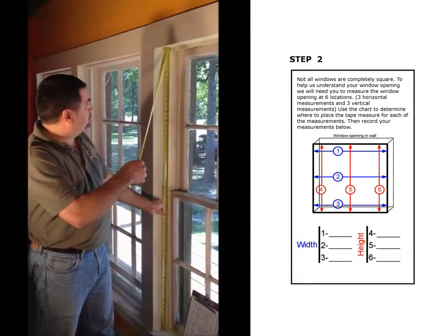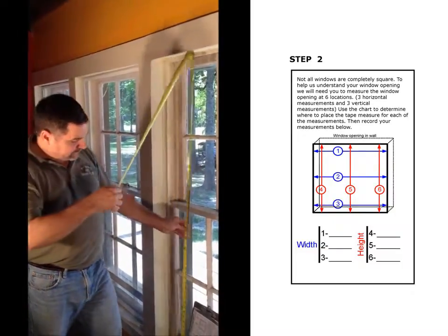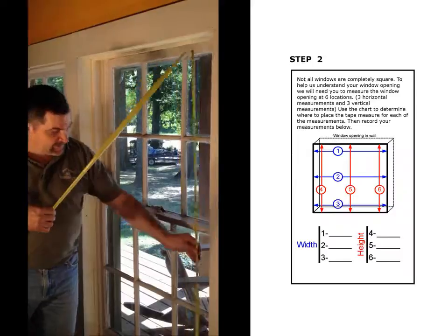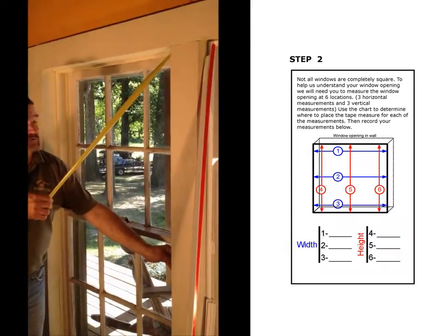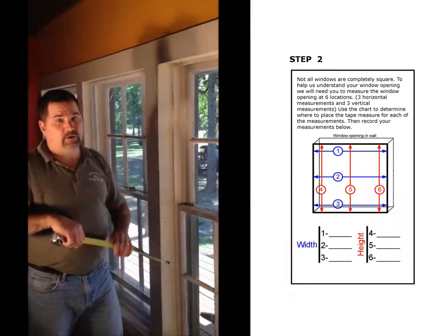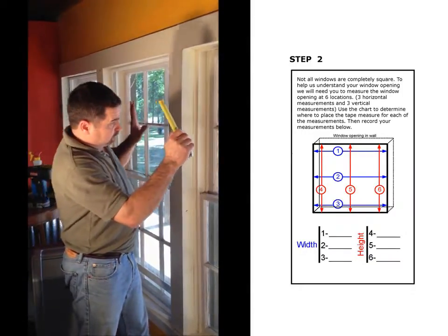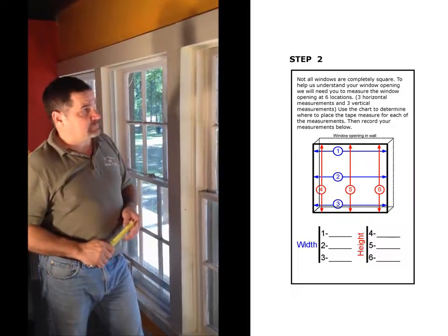This is a good example. This window is 60 1⁄2 on the left. The center is about 60 1⁄8. The right is 60. So that's an important number for us to know so that when we make the panel, we can make sure that it fits the opening just like the opening is made.